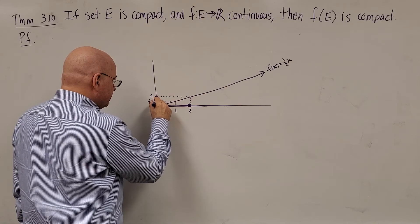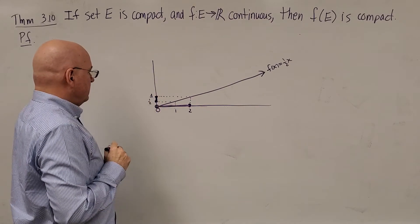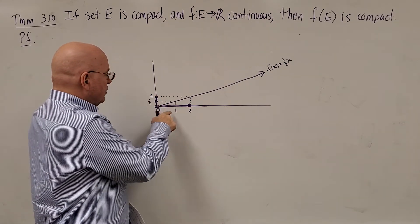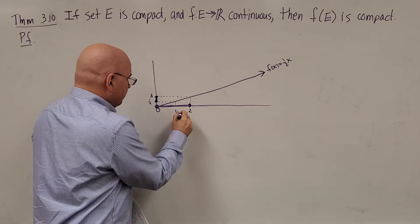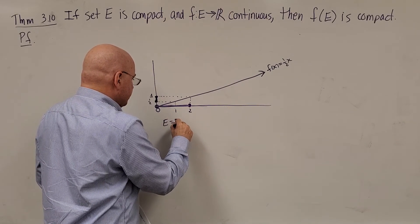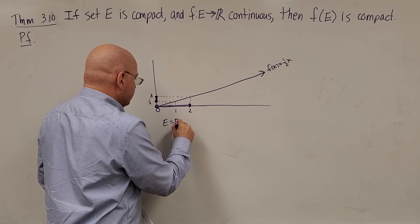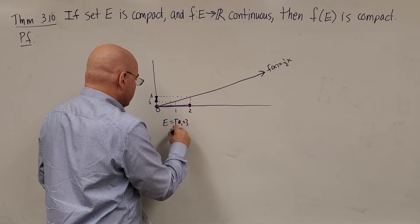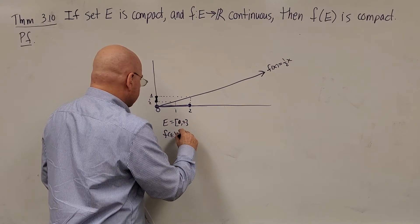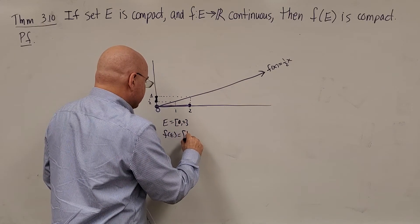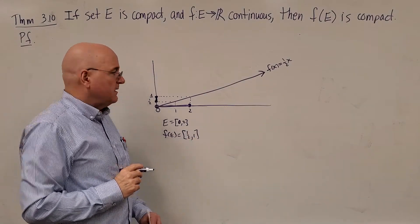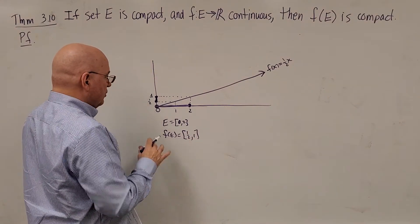So if our set E equals the closed interval [0, 2], then F(E) is also a compact set — the closed interval from 0 to 1.